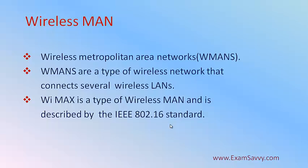Wireless MAN will be used in the case of metropolitan areas. These types of wireless networks connect several wireless LANs. A group of local area networks connected together forms a metropolitan area network. If you need to connect a group of local area networks, that is called a metropolitan area network, and we use a wireless metropolitan area network system. WiMAX is a type of wireless metropolitan area network, described by the IEEE 802.16 standard.